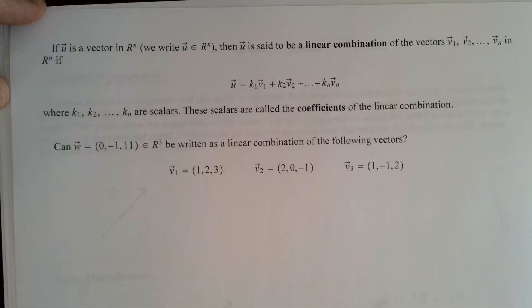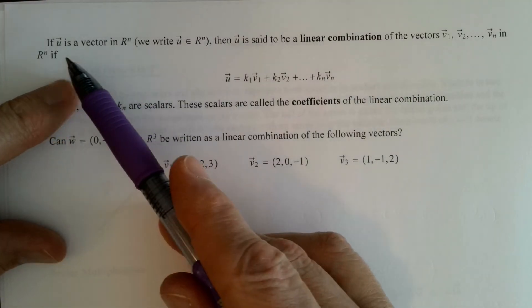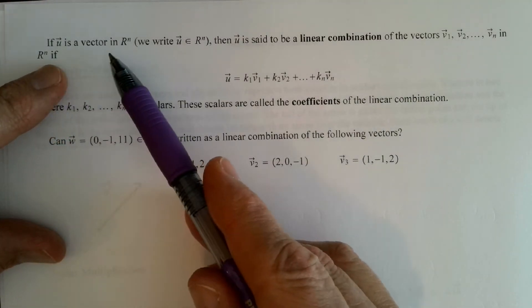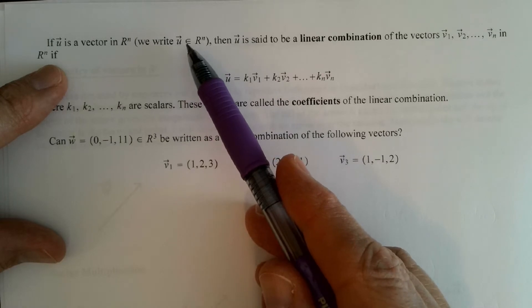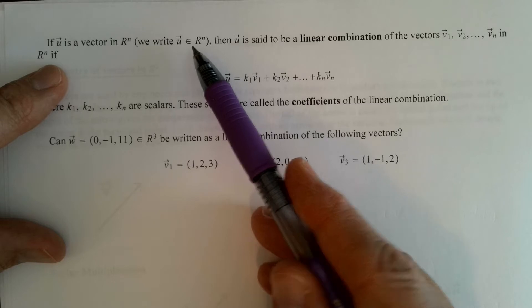So let's take a look at this problem here. First of all, if u is a vector in n space, we write u as an element of n space. This is the notation.